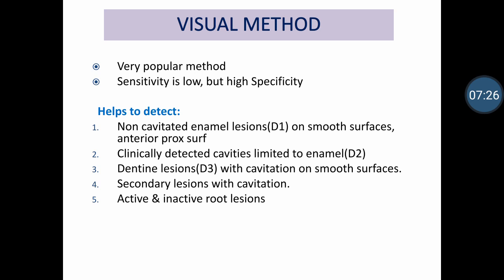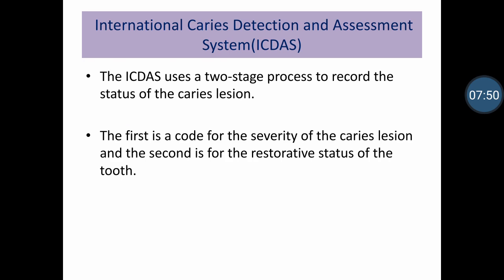The visual method is the most popular method used generally at the clinical chairside, but its sensitivity is low with high specificity. This visual method majorly helps in detecting enamel caries, dentine caries, smooth surface caries, some root lesions, and secondary caries at the tooth-restoration interface. Visual caries assessment can also be done using the International Caries Detection and Assessment System, ICDAS. It is a two-digit coding process to describe the status of the caries lesion: the first code denotes the severity of the caries lesion, and the second denotes the restorative status of the tooth.